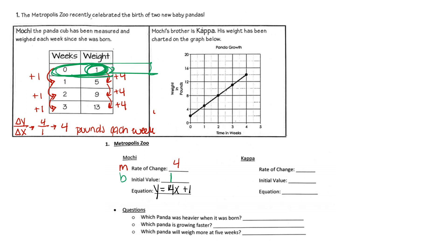For Kappa, we look at the graph and pick points we can read clearly. I can read the point at (2, 8) and the point at (4, 14), since 14 is between 12 and 16. Going from 8 to 14 is a change in y of six — counting by two, that's 2, 4, 6. Going across the bottom from 2 to 4 is a change in x of two. So the rate of change is six over two, which equals three.